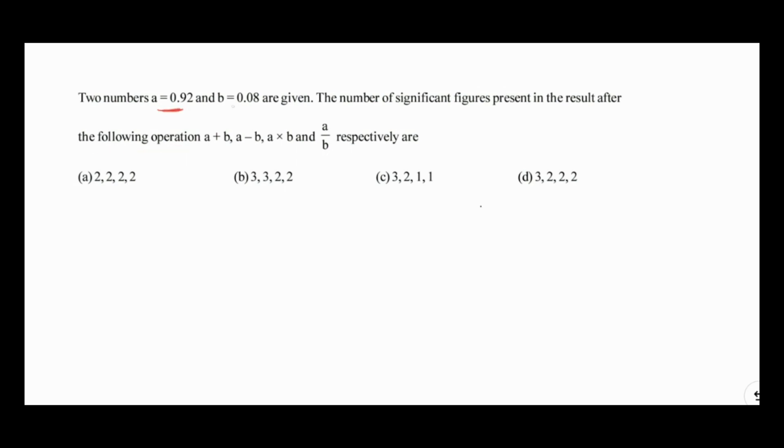If you observe A and B, the number A has two significant digits and number B has only one significant digit. For addition, the rules of significant digits state that when two numbers are added, the number with the least digits after the decimal determines the final decimal places in the result.